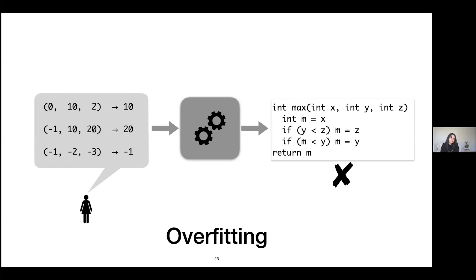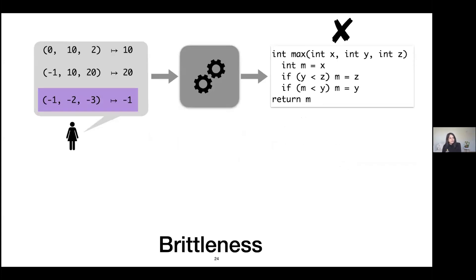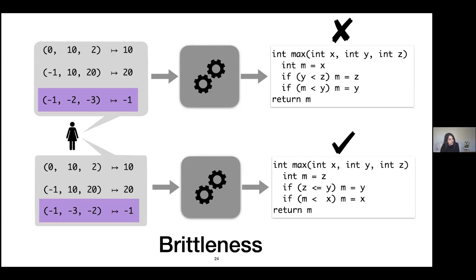To illustrate brittleness: take this scenario and focus on the last I/O example. If we just swap the last two inputs — swap -2 and -3 — we get an instance of the synthesizer switching from an incorrect program to the correct program, which is semantically quite different. A small perturbation in the input, one that doesn't really change the semantics, results in semantically divergent programs. I found this witness to brittleness while playing around with a synthesizer, and it shaped how I think about inductive program synthesis.